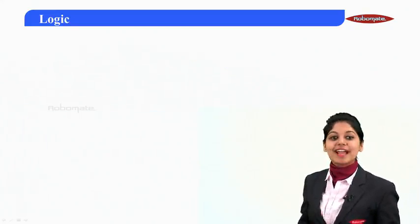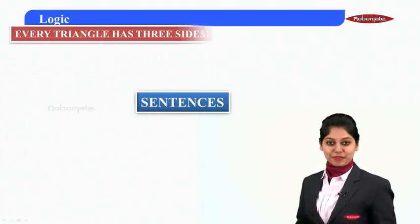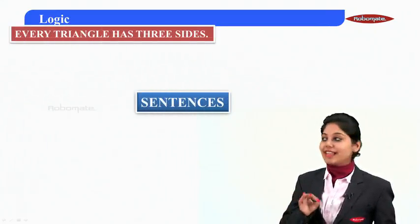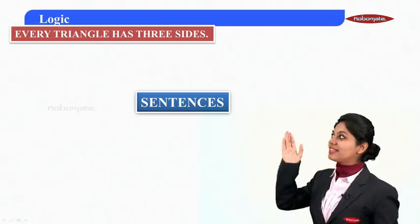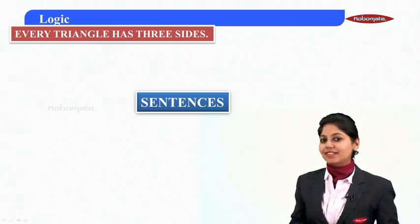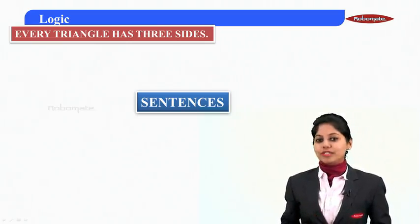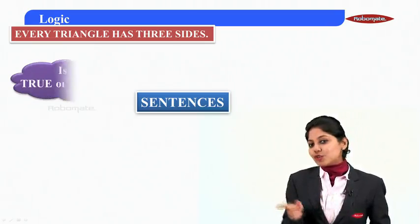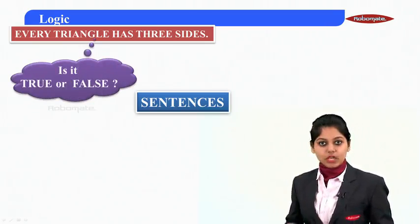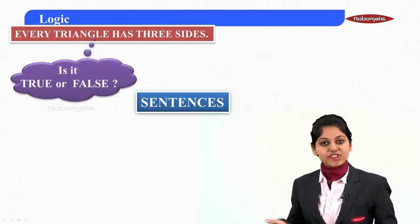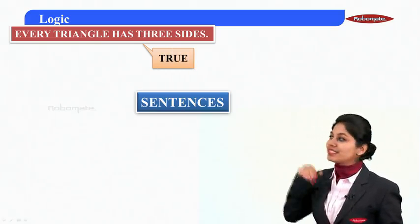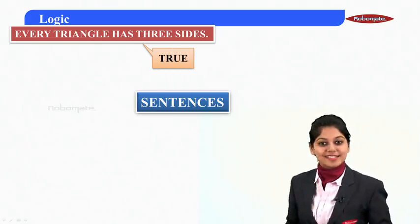Here we have some sentences in front of you. The first one: 'Every triangle has three sides.' If I ask whether it's true or false, what will you say? Obviously, each triangle has three sides, and that simply means the given sentence is a true sentence.